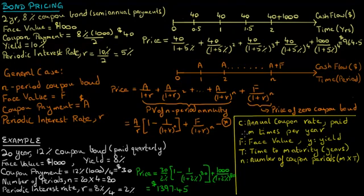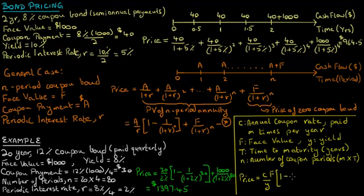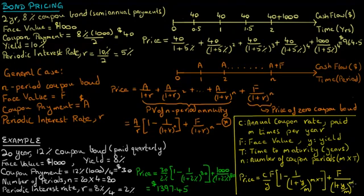We can generalize the argument as follows. Let C denote the annual coupon rate where the coupon is paid M times per year, and let F and Y denote the face value and yield to maturity of the bond respectively. The time to maturity is denoted by T, and N is the total number of coupon periods, equal to M times T. The price of this coupon bond equals C times F divided by Y, times 1 minus 1 over (1 plus Y/M) to the power M times T, plus the face value F discounted at the periodic interest rate Y/M over M times T periods.